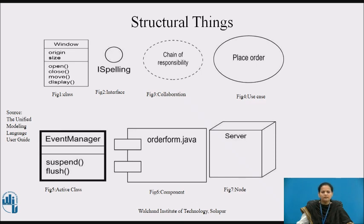Next, a component is a physical and replaceable part of a system that conforms to and provides the realization of a set of interfaces. Graphically, a component is rendered as a rectangle with tabs, usually including only its name, as in figure six. A node is a physical element that exists at runtime and represents a computational resource. A set of components may reside on a node and may also migrate from node to node. Graphically, a node is rendered as a cube, usually including only its name, as in figure seven.